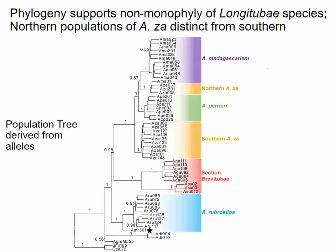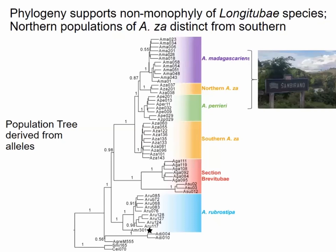Using expanded sampling with allelic data and a phylogenetic approach with samples color-coded by traditional species designations, we confirmed that populations of za in the north are distinct from those in the south — even with increased sampling. Northern za populations are more closely related to madagascariensis and perrieri than to southern za. This break corresponds to the Betsiboka River basin, which has been shown to act as a barrier to gene flow in multiple lineages.